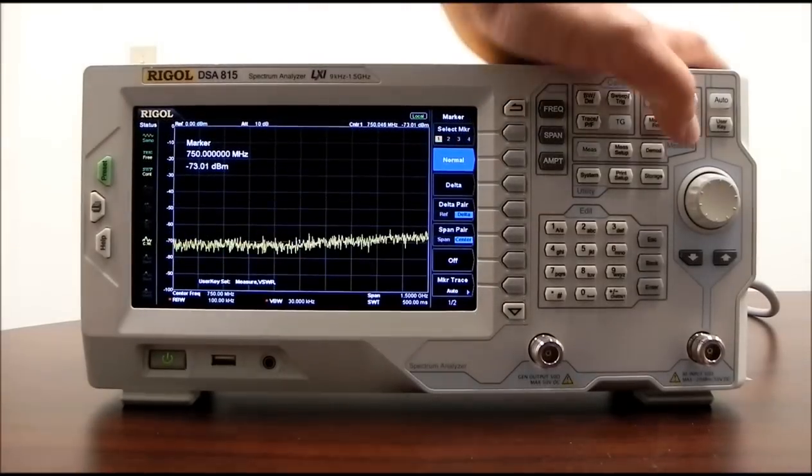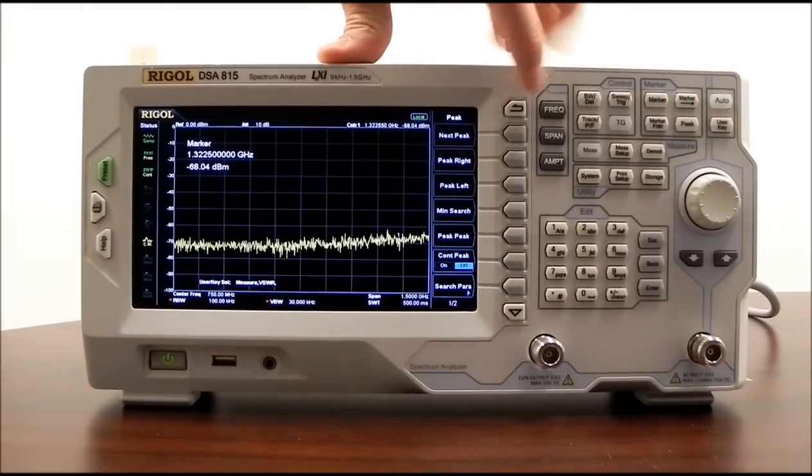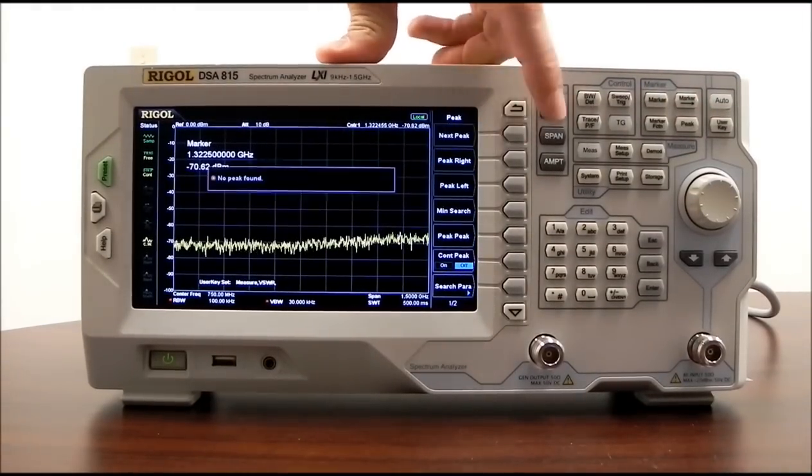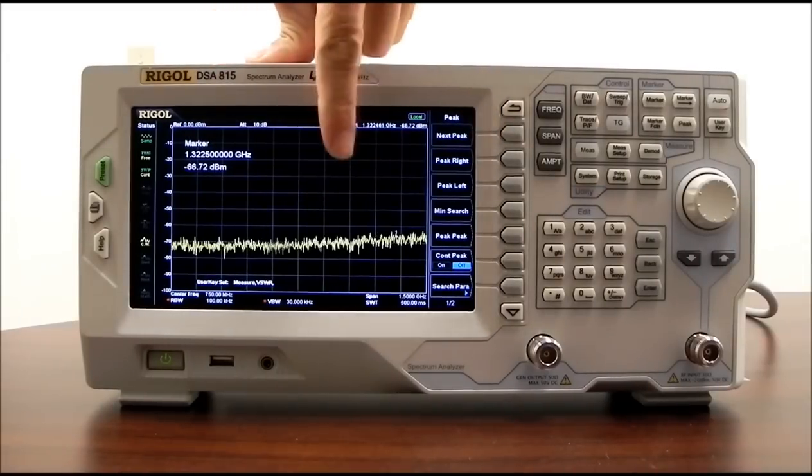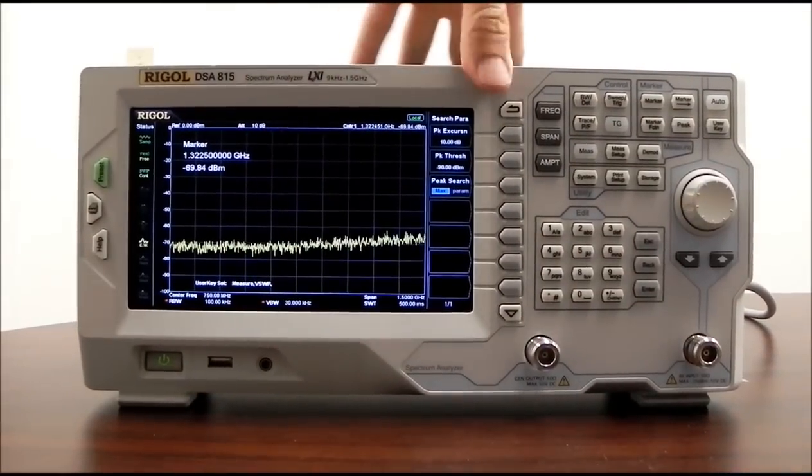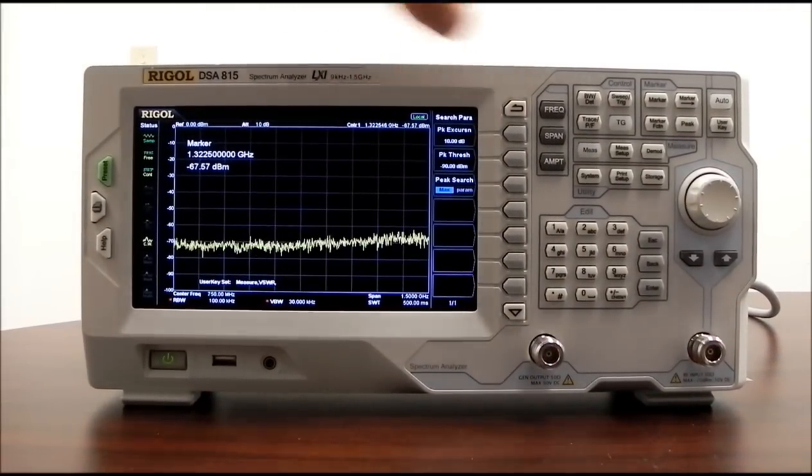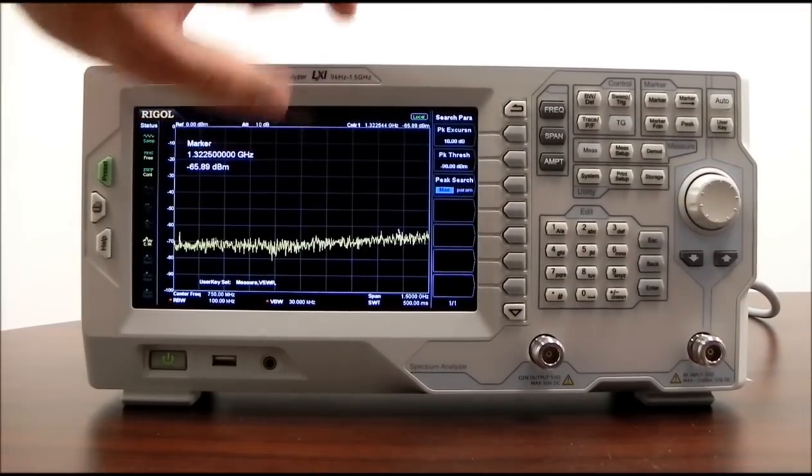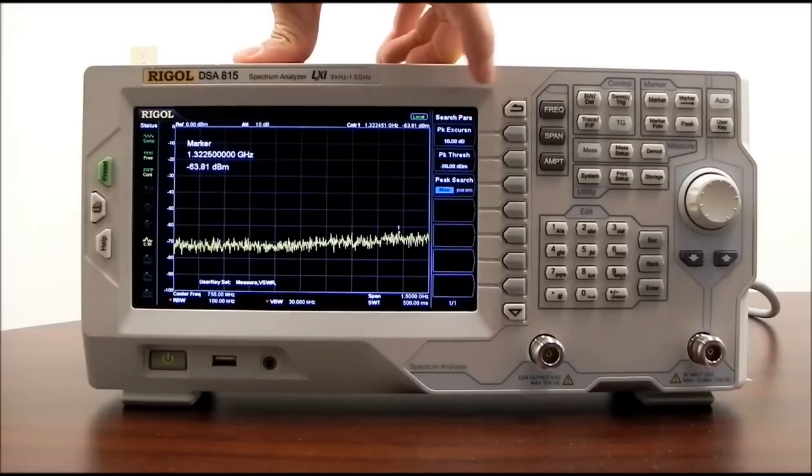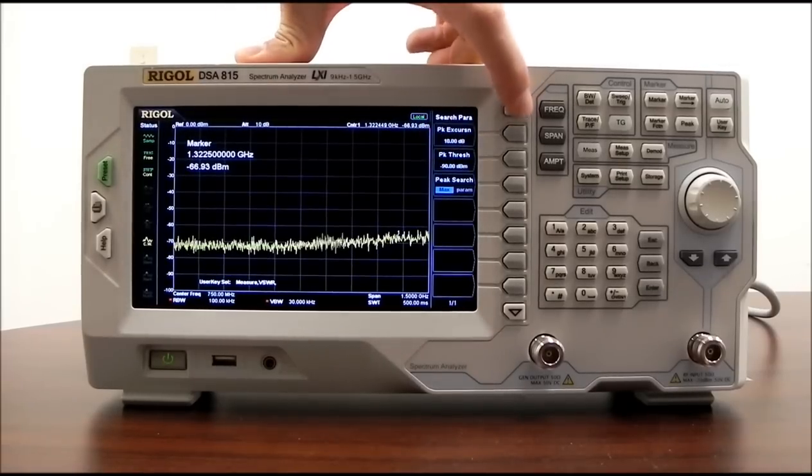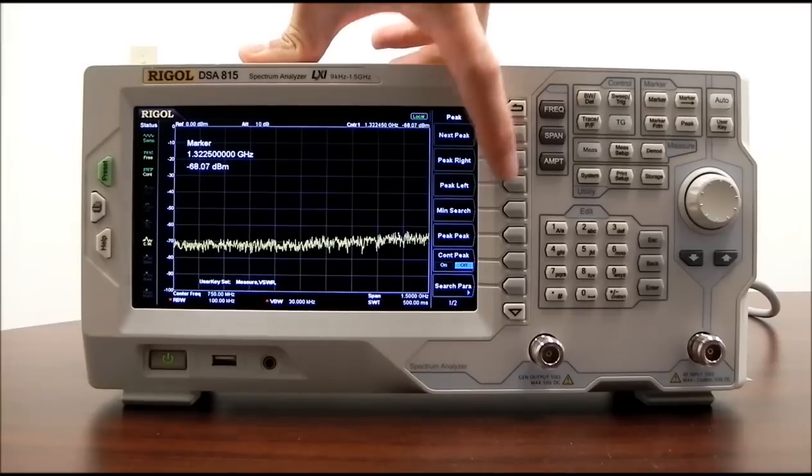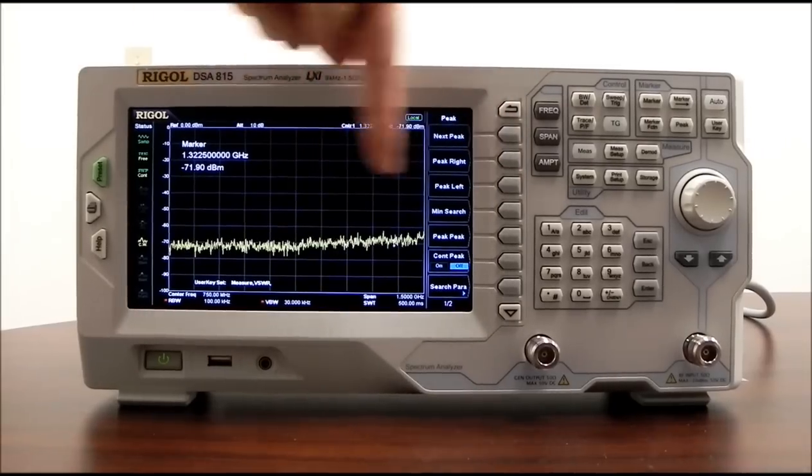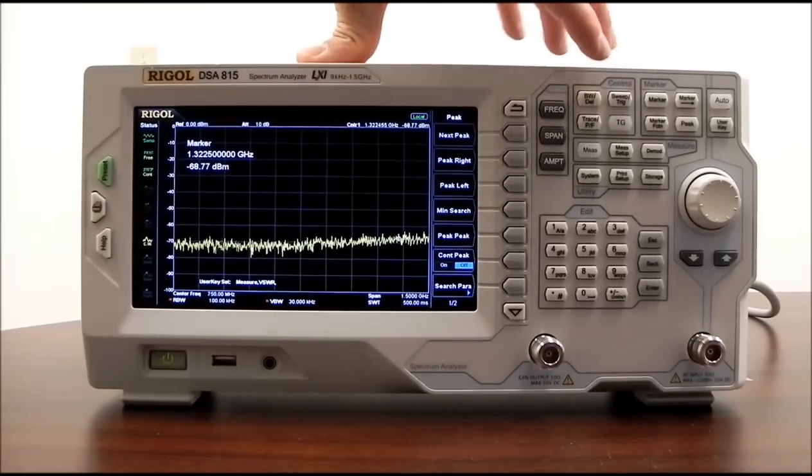Similar to the marker function is a peak function. And a peak, we can actually select the next peak value. In this case, we don't have a peak shown, but a peak is going to be determined by whatever search parameters we have. So you can set a particular amplitude value and a threshold that determines or defines what a peak is. Once you've defined what a peak is, you can use these quick keys, next peak, peak right, peak left, to be able to search through the individual peak values.